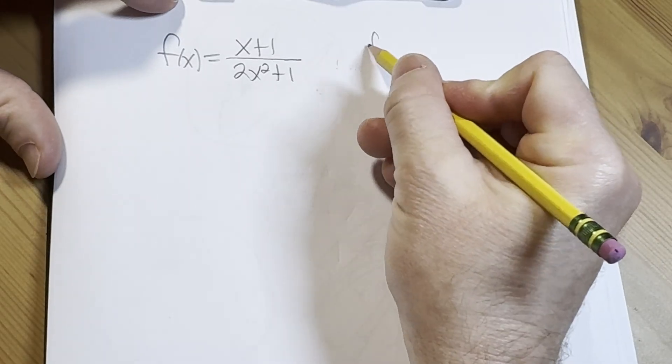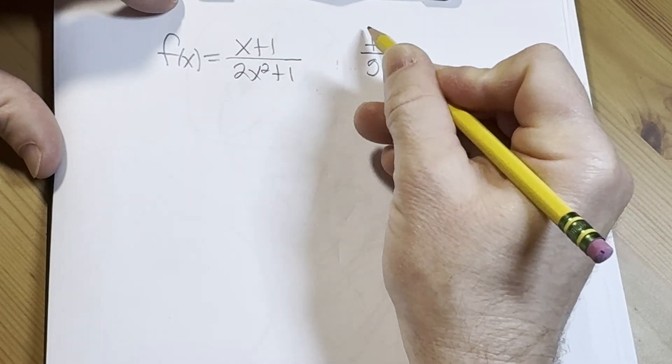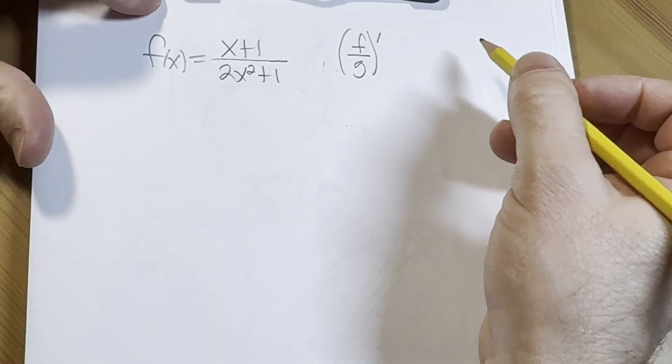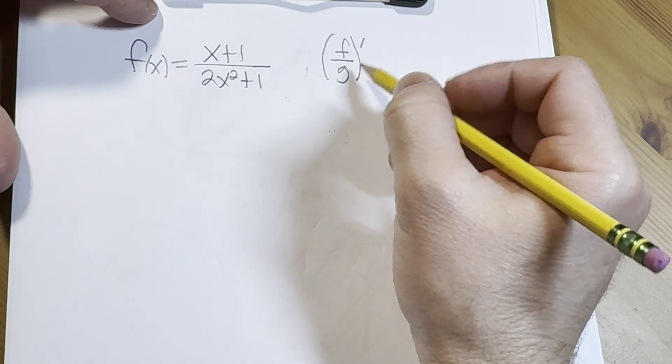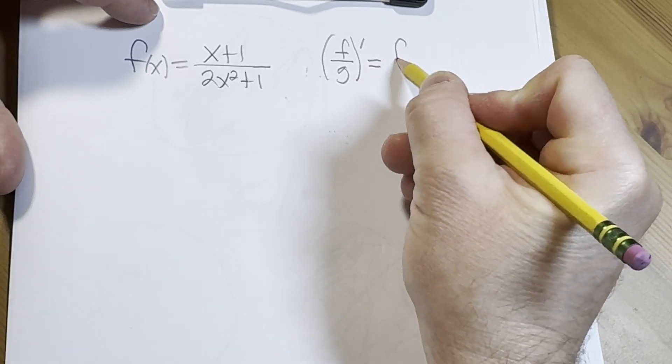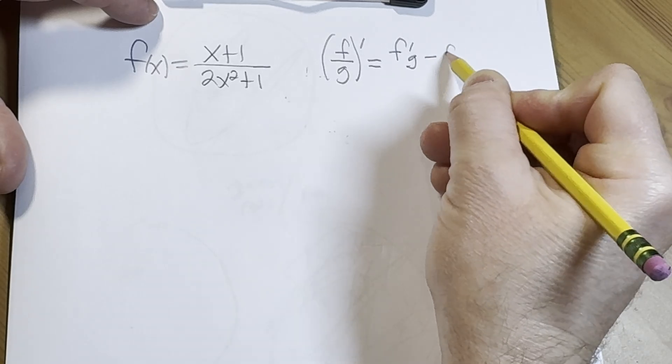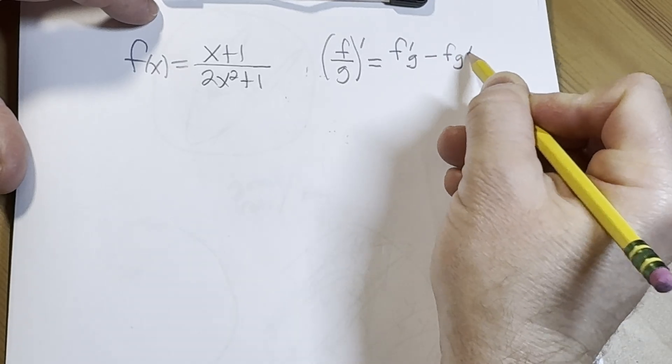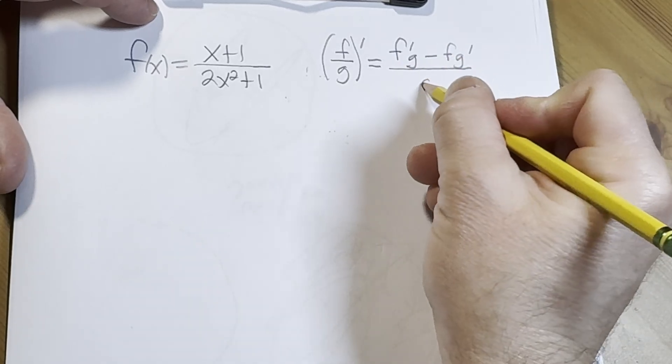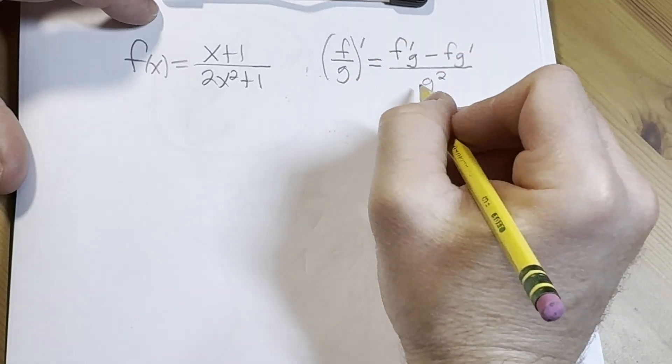Recall the quotient rule: if you have a function f divided by g and you want the derivative, think of f as your top function and g as your bottom function. It's the derivative of the top times the bottom, minus the top times the derivative of the bottom, all over the bottom squared. This is the quotient rule.